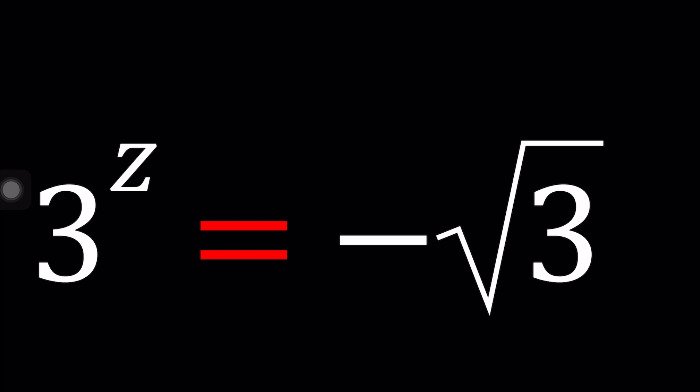We have 3 to the power z equals negative square root of 3, and we're going to be solving for z values. I'm also going to be showing you the result from Wolfram Alpha. Let's find out if that agrees with what I found.